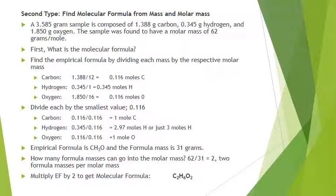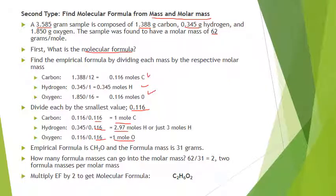The last method uses actual sample mass and molar mass instead of percent composition. Given a 3.585 gram sample: 1.388 g carbon, 0.345 g hydrogen, and 1.85 g oxygen, with molar mass 62 grams. Find the empirical formula by dividing each mass by their molar masses, then divide by the smallest value, 0.0288. You get a ratio of 1 carbon to 3 hydrogens to 1 oxygen — empirical formula CH3O. The formula mass is 12 + 3 + 16 = 31.